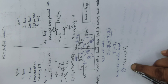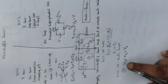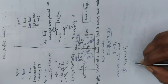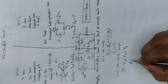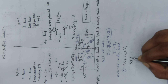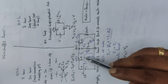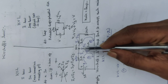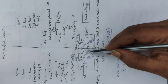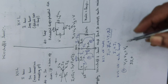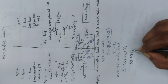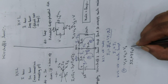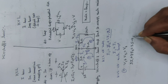Using Ohm's law, v equals ir. For v1, the current is i1 and resistance is 5 ohms, giving 5i1. For v2, checking the current direction — it is clockwise in both cases, so it is positive — the resistance is 7 ohms with current i2, giving 7i2. Therefore the equation is: 5i1 plus 7i2 equals 25. This is equation number one obtained from KVL at loop one.